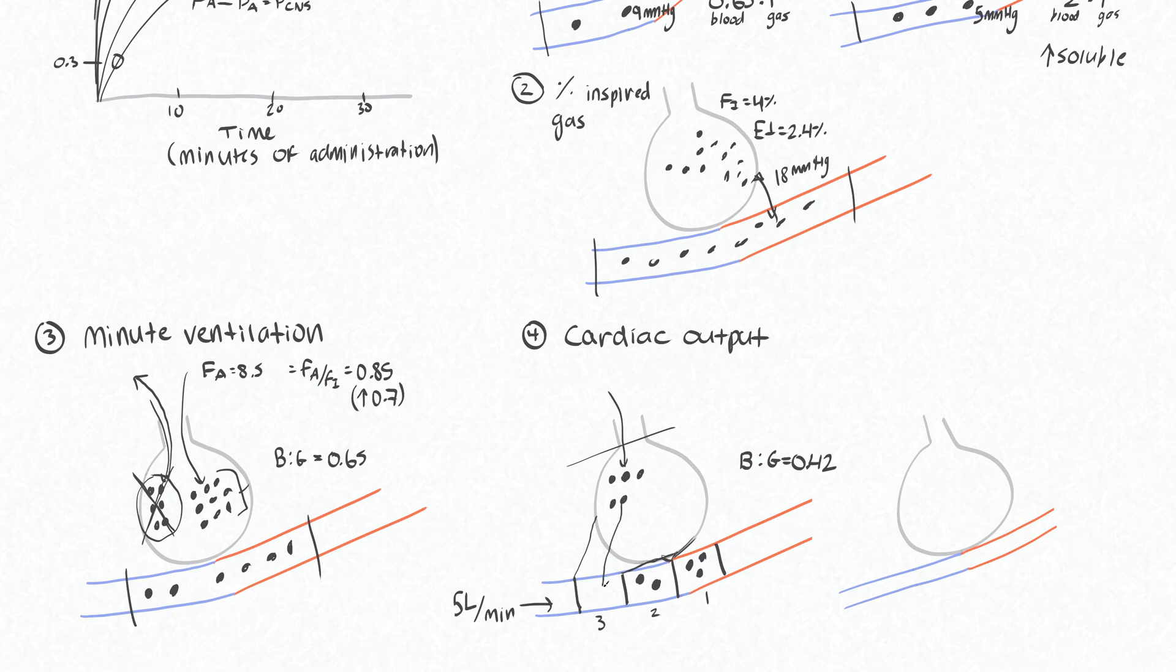So for these to reach equilibrium, even less of the gas particles have to move over. It works out to be actually 1.5 particles here and then leaving us with 3.5 in our alveoli.